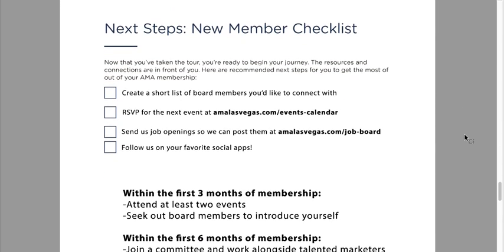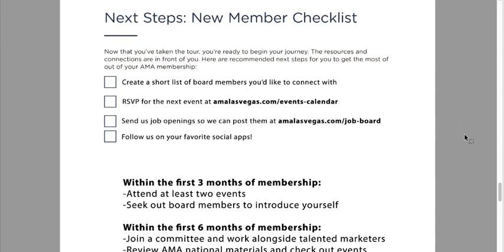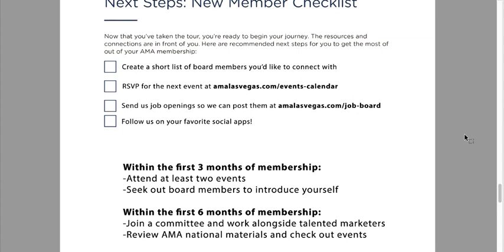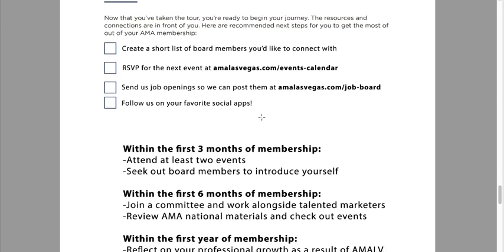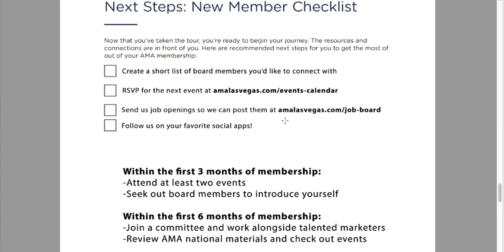Next steps — new member checklist. Now that you've taken the tour, you're ready to begin the journey. Create a short list of board members you'd like to connect with and make it a point to reach out to them — go to coffee, go to happy hour, meet up and pick their brain. Number two: RSVP for the next event at amalasvegas.com/events-calendar. Number three: send us job openings so we can post them on the job board — this is for members and non-members alike. And follow us on the social apps. Do these four things and your membership will take you to the next level.